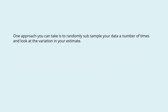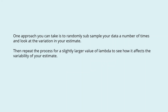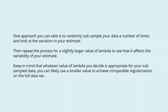One approach you can take is to randomly subsample your data a number of times and look at the variations in your estimate. Then repeat the process for a slightly larger value of lambda to see how it affects the variability of your estimate. Keep in mind that whatever value of lambda you decide is appropriate for your subsample data, you can likely use a smaller value to achieve comparable regularization on a full set of data.